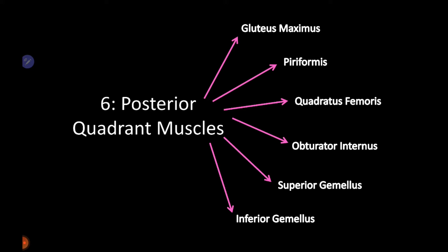There are six posterior quadrant muscles: gluteus maximus, piriformis, quadratus femoris, obturator internus, and superior and inferior gemelli. All these muscles are responsible for extension of the thigh.